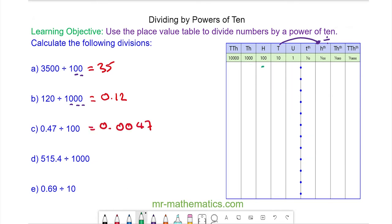For question D, 515.4 divided by 1,000. So we move three places to the right. So the five hundreds go into the tenths. Then we have a 1, a 5, and a 4. So 0.5154.